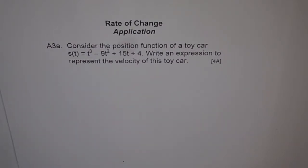Here is an application problem on rate of change. This is a very interesting question and it had many parts, so I split it into a couple of pages. Now in the first page, let's go through the question. Consider the position function of a toy car: s(t) = t³ - 9t² + 15t + 4.